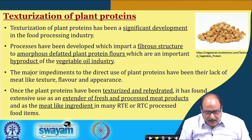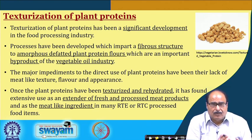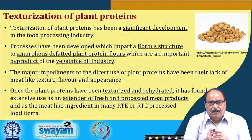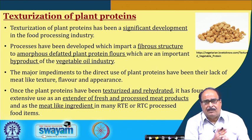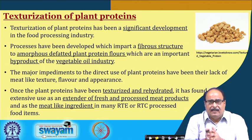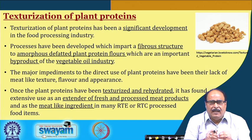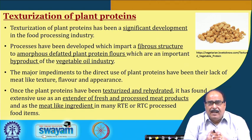Processes have been developed which impart a fibrous structure to amorphous defatted plant protein flours. Defatted plant protein flours are important byproducts of the vegetable oil milling industries. The major impediments to the direct use of these plant protein flours have been their lack of meat-like texture, flavor, and appearance. Once texturized and rehydrated using appropriate processing technology, plant proteins have found extensive use as extenders of fresh and processed meat products and as meat-like ingredients in many ready-to-eat or ready-to-cook processed food items.